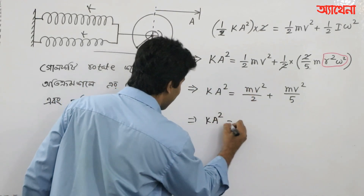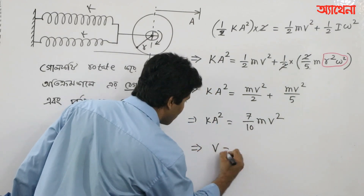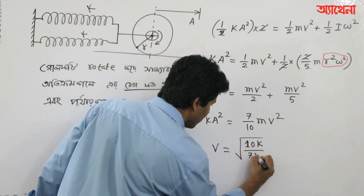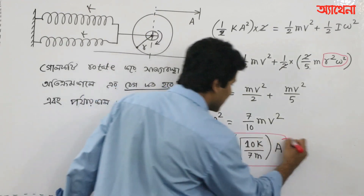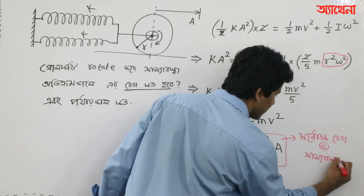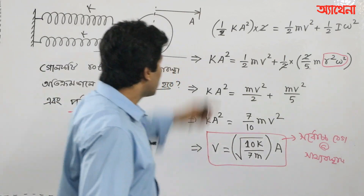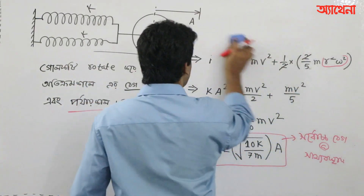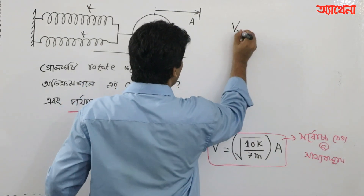Then we have a simple fancy math. I have got 7 by 10 m into the square. So, if you have a look at V, then V is equal to root over (10k divided by 7m) into A. So, if you think the same thing, you can add as a t. The same thing will be the same thing. But if you think the same thing, V-max, which is omega into A.